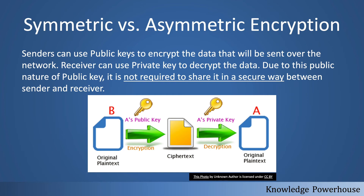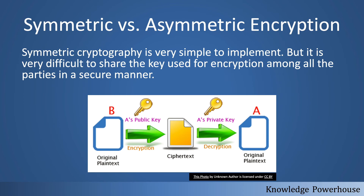Senders can use the public key to encrypt the data, which is then sent over the network, and the receiver uses the private key to decrypt it. Because of the public nature of the public key, there is no need to share it securely — you can share it over a plain channel. This solves the key-sharing challenge that was very difficult in symmetric encryption. Symmetric cryptography is simple to implement but difficult to share the key.